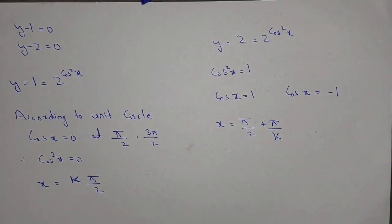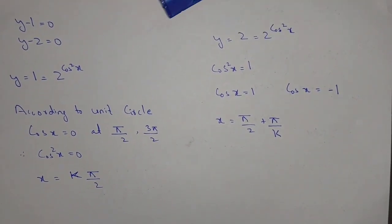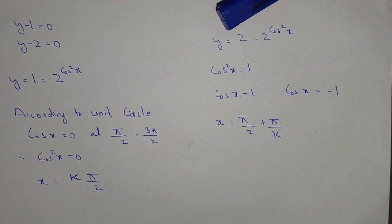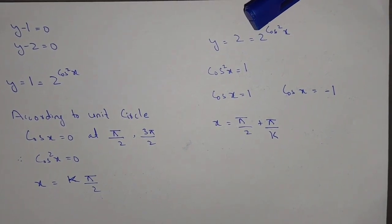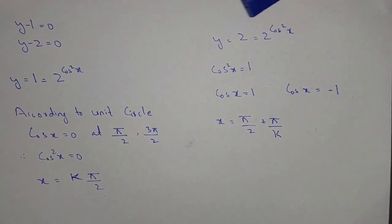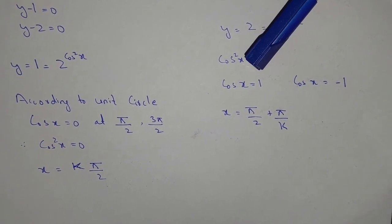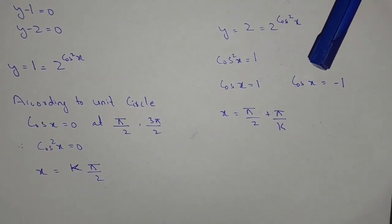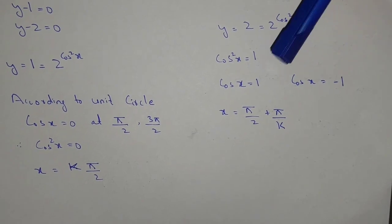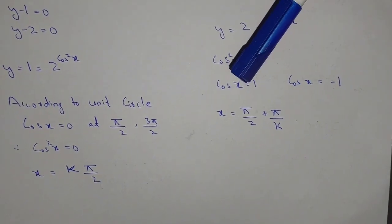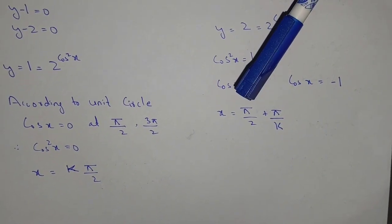From the second equation, y - 2 = 0, so y = 2 = 2^(cos²x). If we have cos x = 1 and cos x = -1, then according to the unit circle, the values we will have...